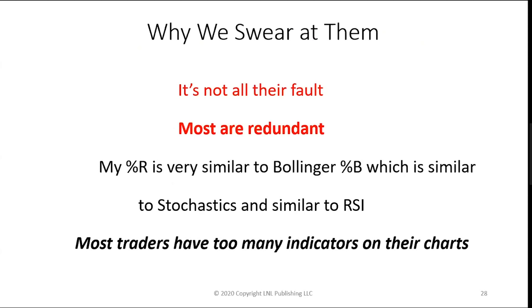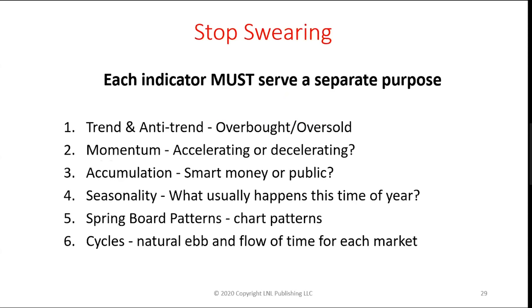We swear at indicators, but it's not all the indicator's fault — most of them are so redundant. This is the biggest error I see when I look at people's charts. They have percent R, stochastics, Bollinger %B, RSI — all those overbought/oversold indicators all look about the same. You only need one, that's all you need. The thing with indicators is most people have too many and get lost — paralysis by analysis. Each indicator must serve a separate purpose. When you look at my charts, you'll see each indicator serves a separate purpose.